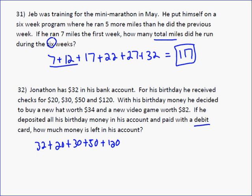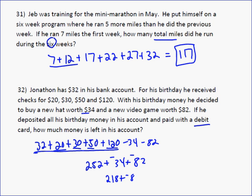Then you take away what he spent, so you subtract 34, subtract 82. So if I add all these up, well, 30 plus 50 plus 120 is 200, 220, so it's 252. Minus 34, minus 82. We can change these to plus a negative. So 252 minus 34 is 218, plus a negative 82. Signs are different, so you still subtract.